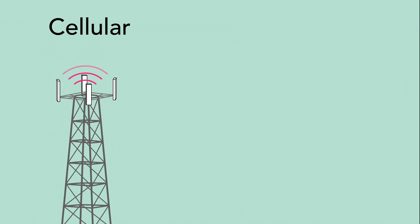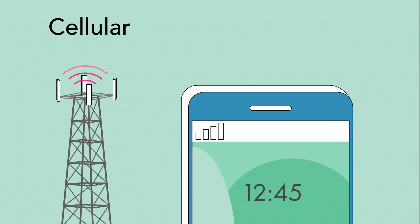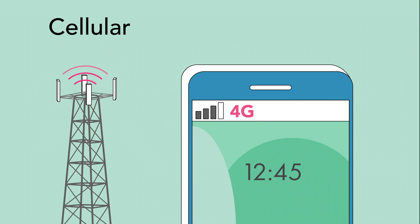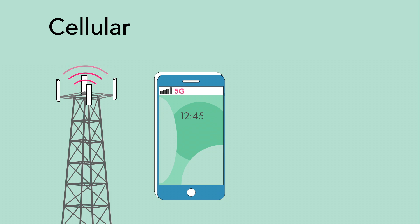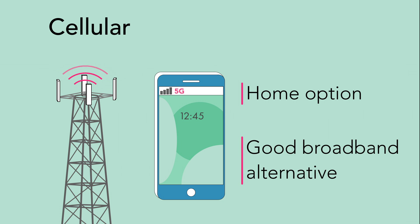Cellular is sold under a few different names, including 4G, LTE, and 5G. These are types of wireless internet connections often used by smartphones, but you can also get these types of connections for your home. Depending on where you live, a cellular connection may be a good broadband alternative.